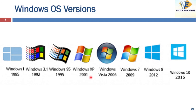Windows NT is a processor-independent, multiprocessing and multi-user operating system. NT stands for New Technology. Windows NT 3.1 was released in 1993, and Windows NT 4 came in 1996 with Windows NT Server and Windows NT Workstation. The NT Workstation was designed for use on both home computers and workstations. Subsequently: Windows XP in 2001, Windows Vista in 2006, Windows 7 in 2009, Windows 8 in 2012, and Windows 10 in 2015.